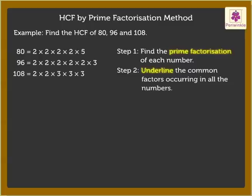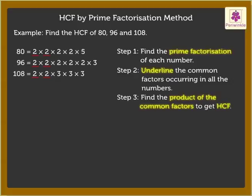Step 2: Underline the common factors occurring in all the numbers. Here, the common factors are 2 and 2. Step 3: Find the product of the common factors to get the H.C.F. Therefore, H.C.F. = 2 × 2 = 4.